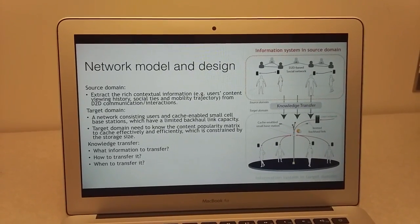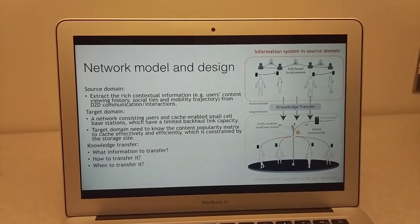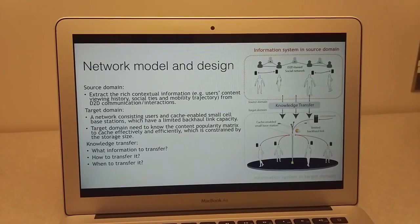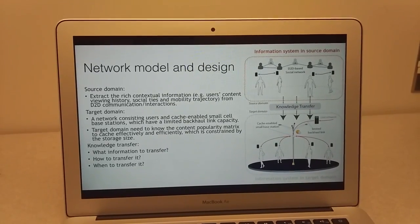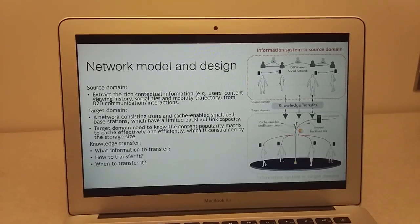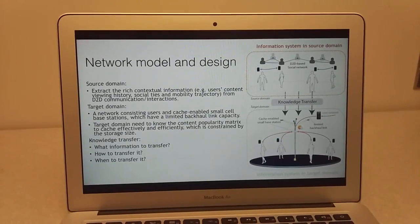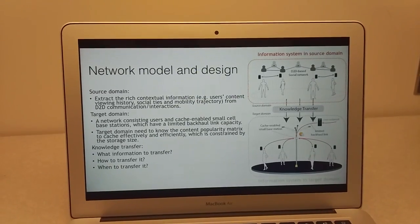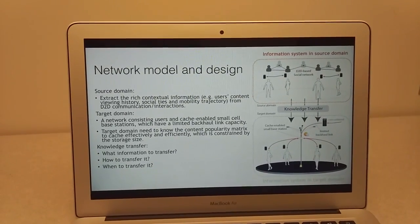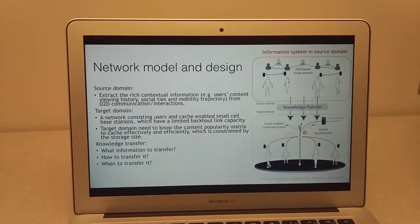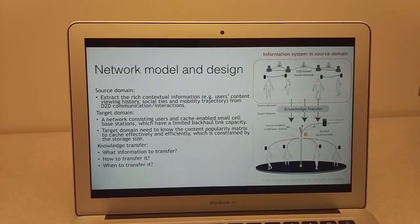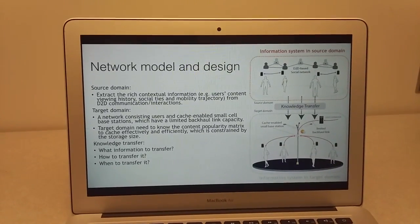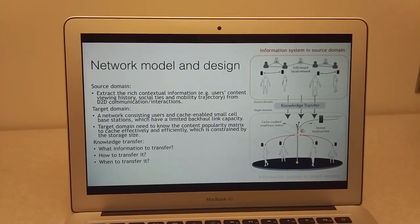In the target domain, it is a network consisting of users and cache-enabled small-cell base stations. But these base stations have limited backhauling capacity. The target domain also needs to know the content popularity matrix in order to cache effectively and efficiently.